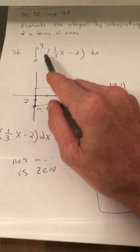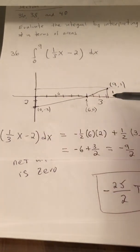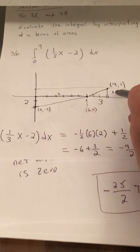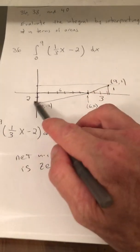And then we're going to be stopped at 9. When x is 9, y is 1. So here's the graph of our line.